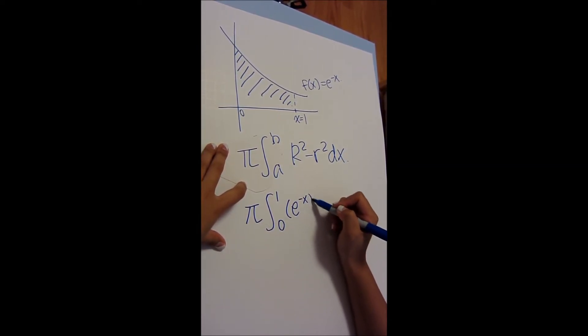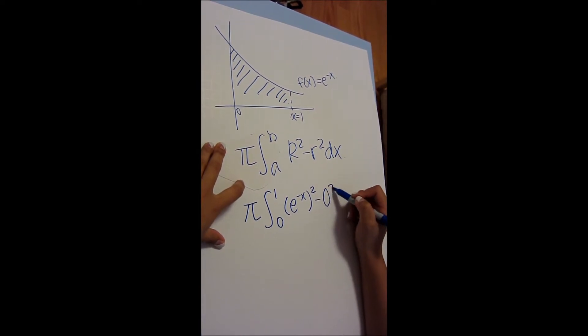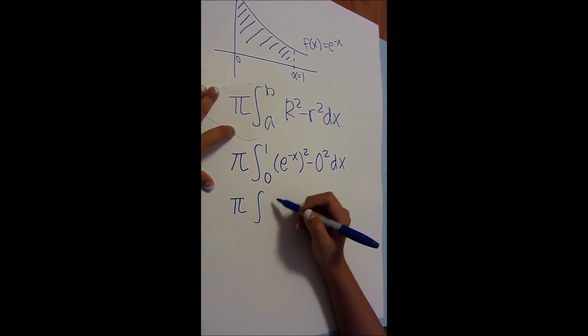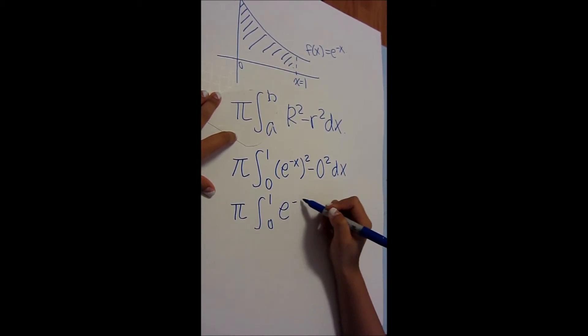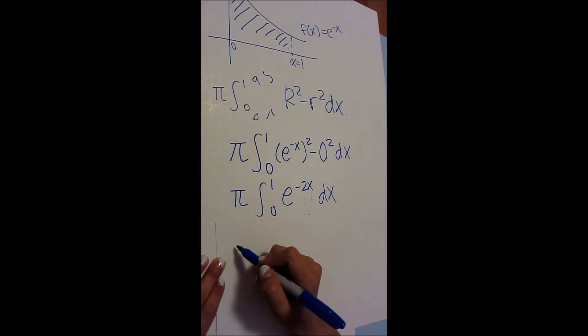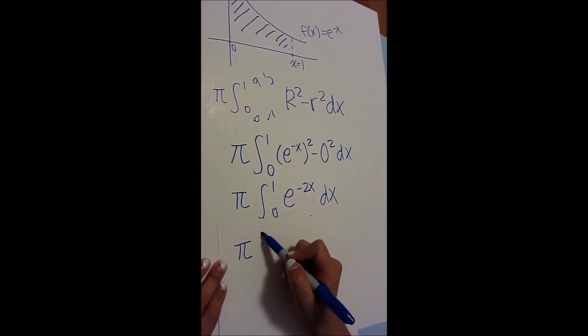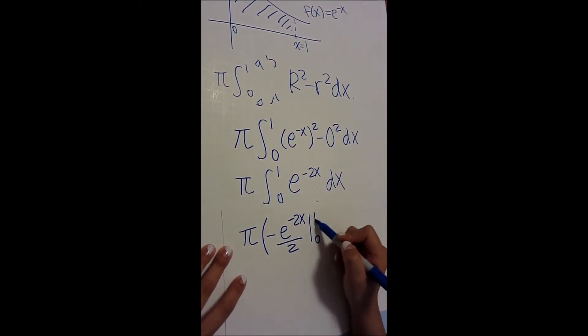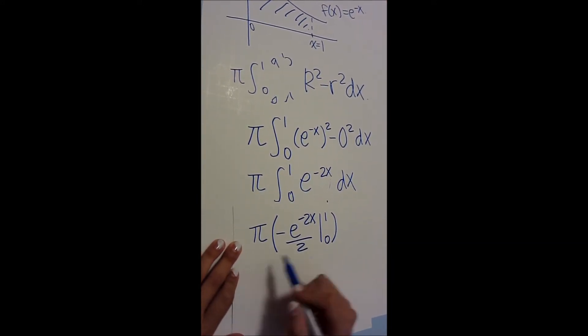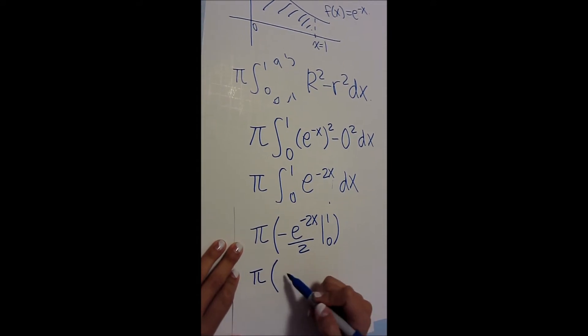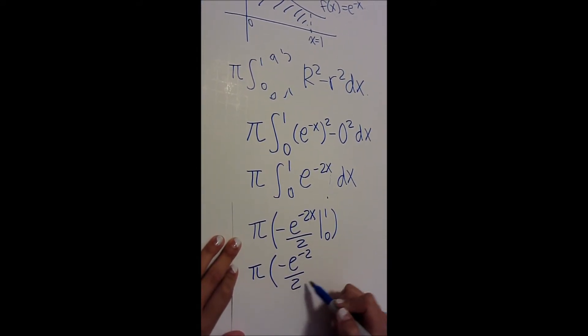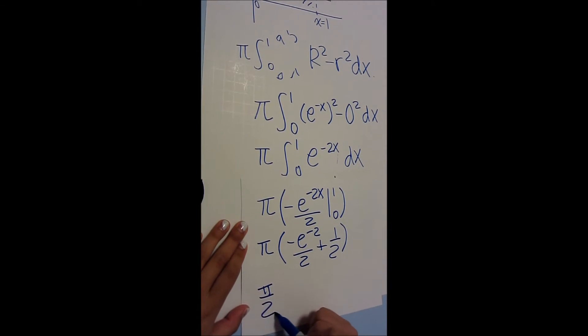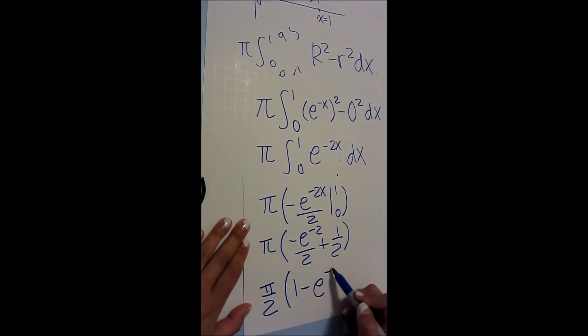When you simplify this formula, you get pi integral 0 to 1, e to the negative 2x dx. When you do the integral, you get pi times negative e to the negative 2x over 2, evaluated from 1 to 0. When you do this, you get pi times negative e to the negative 2 over 2 plus 1 half. When you simplify this, you get pi over 2 times 1 minus e to the negative 2, and that is your answer.